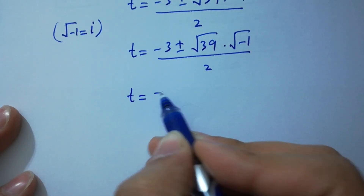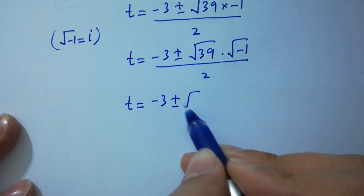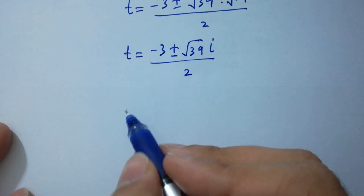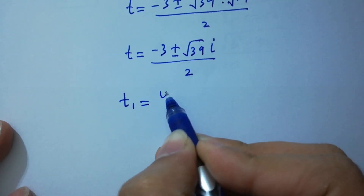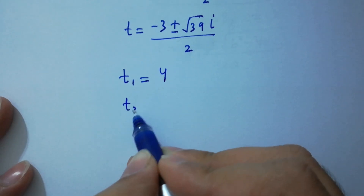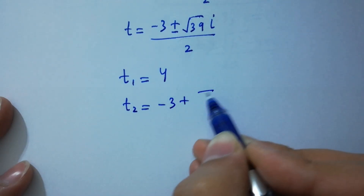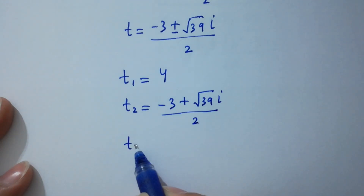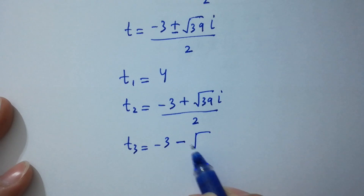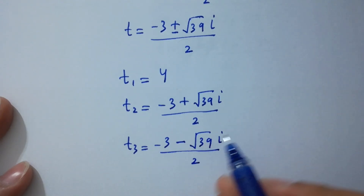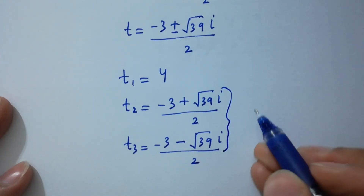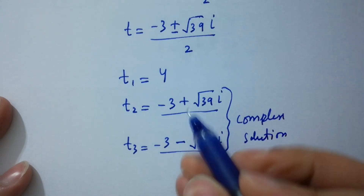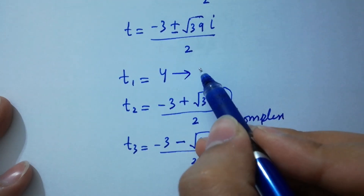So we have three solutions: t₁ = 4, t₂ = (-3 + i√39) / 2, and t₃ = (-3 - i√39) / 2. Here t₂ and t₃ are complex solutions, and t₁ = 4 is the real solution.